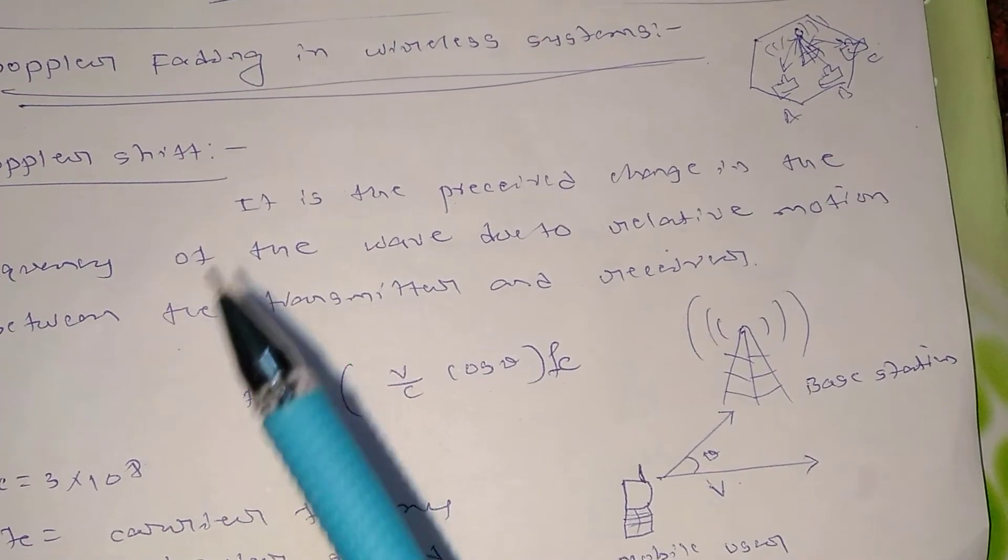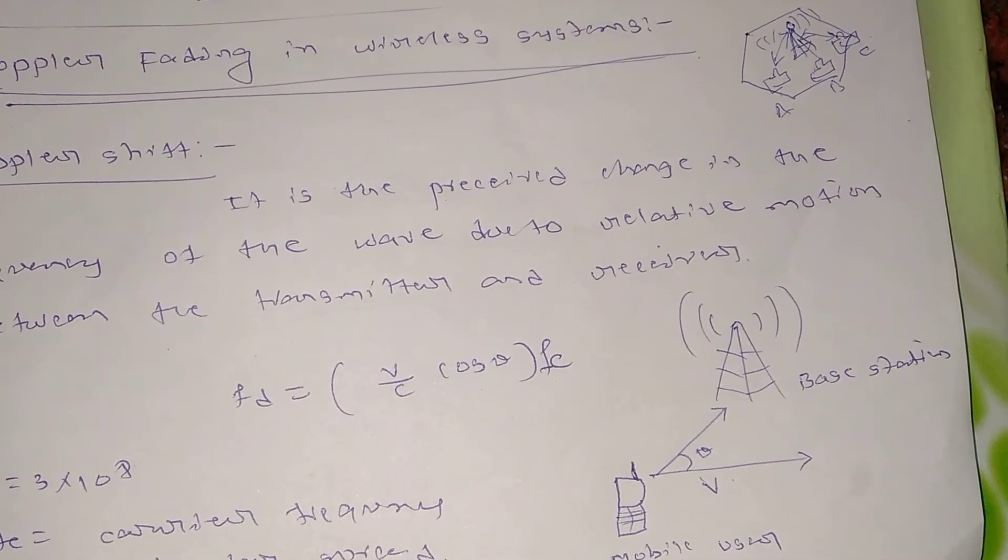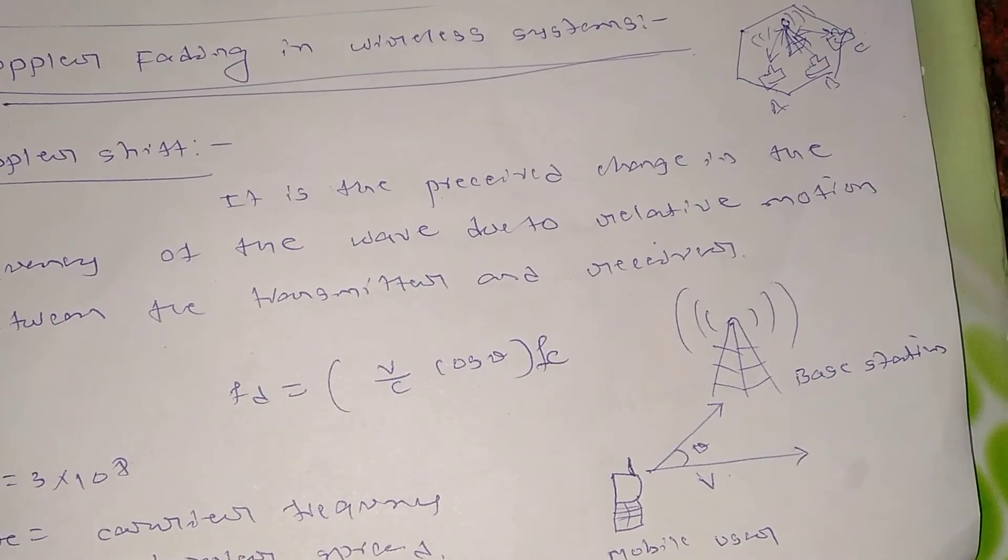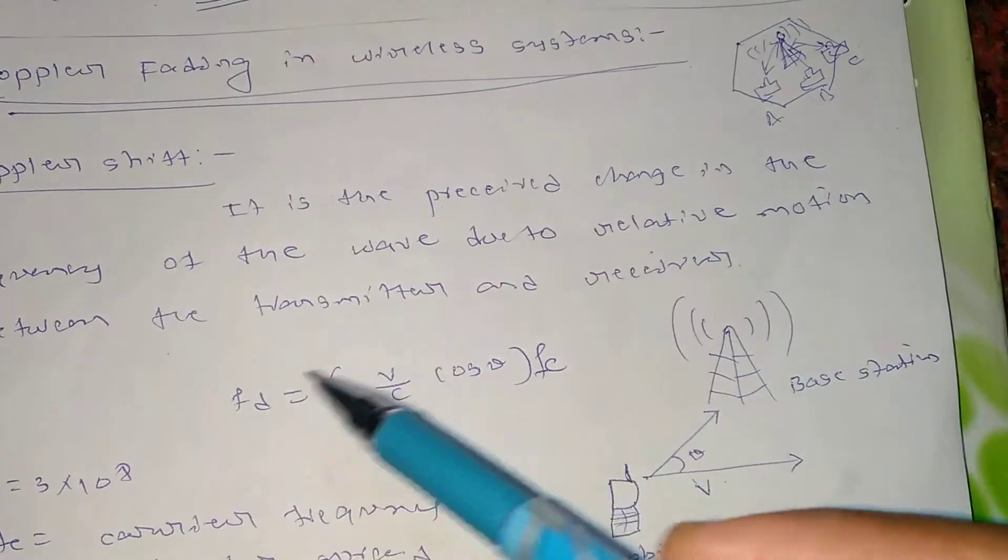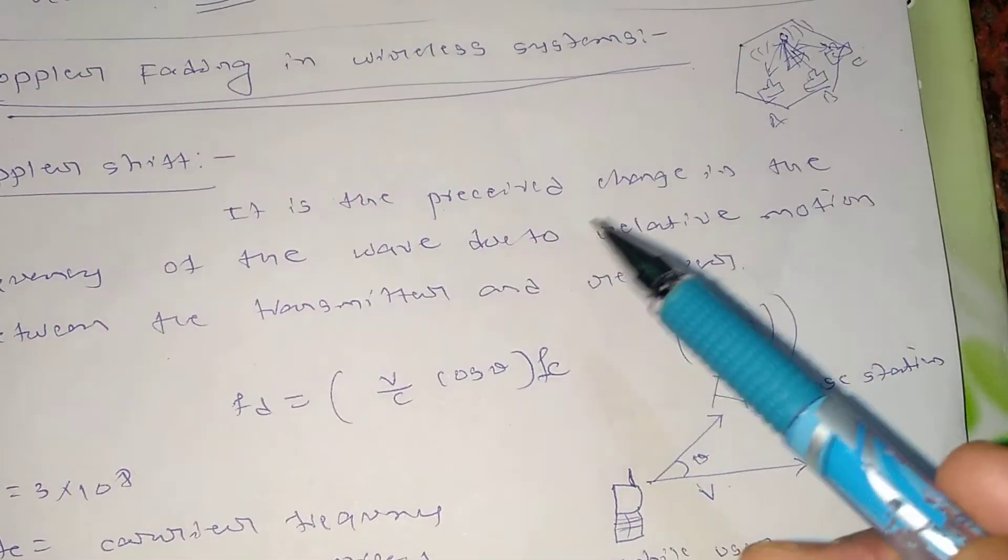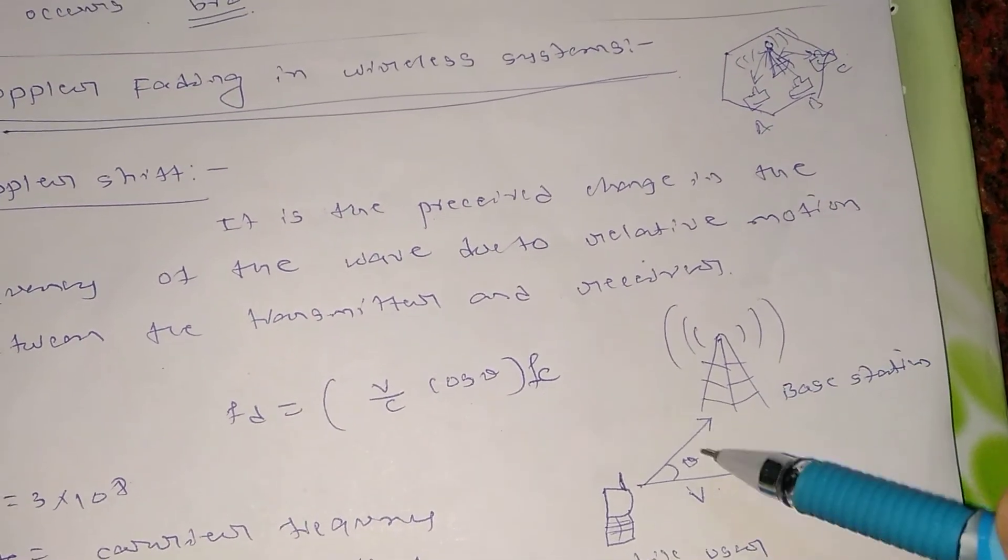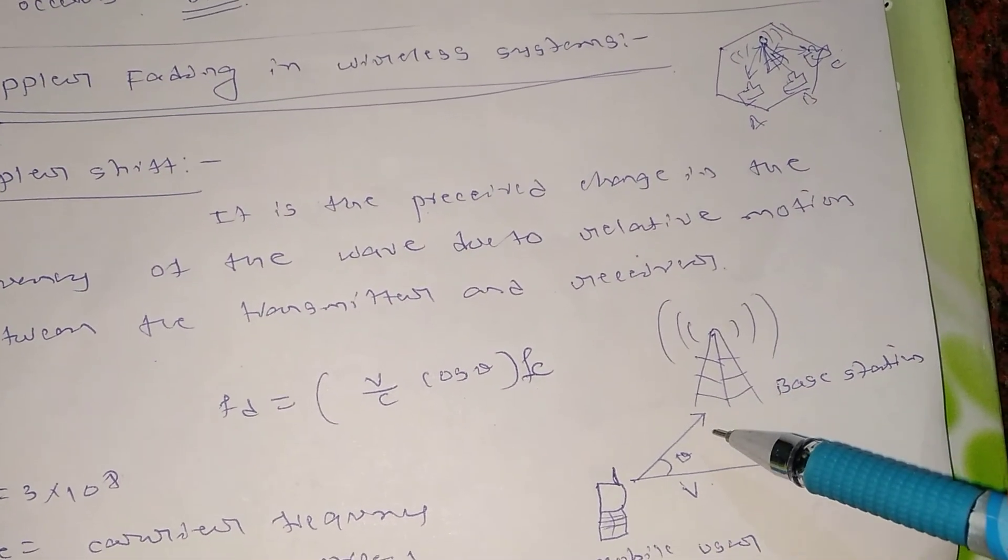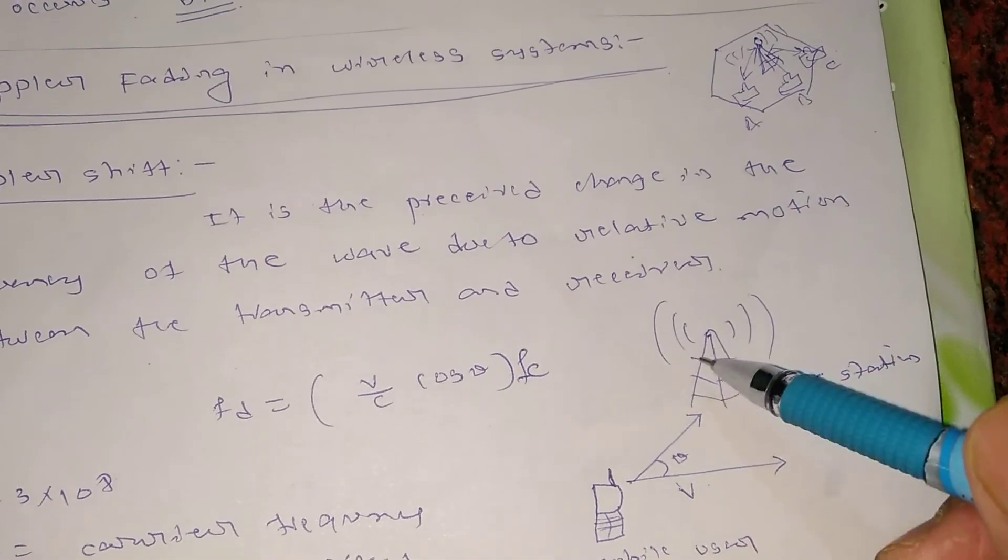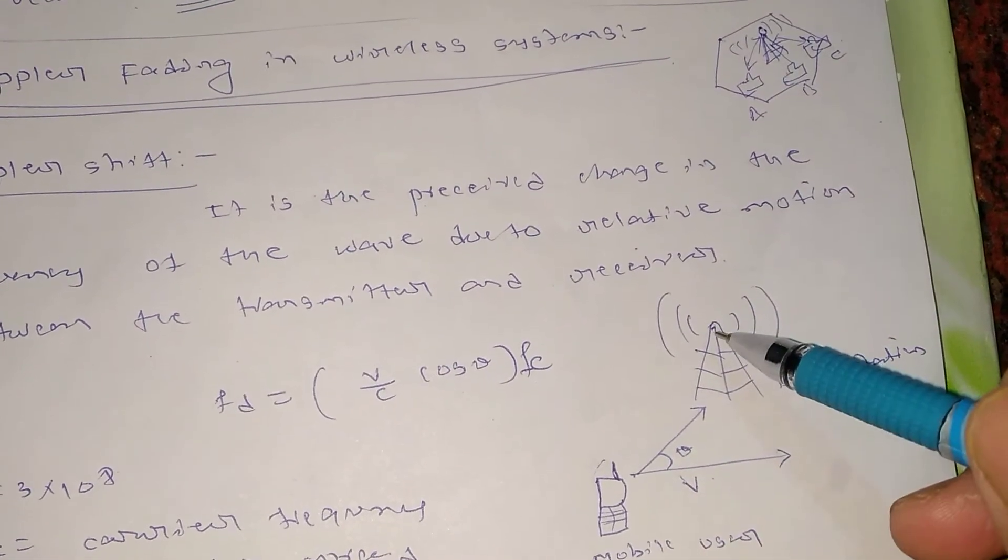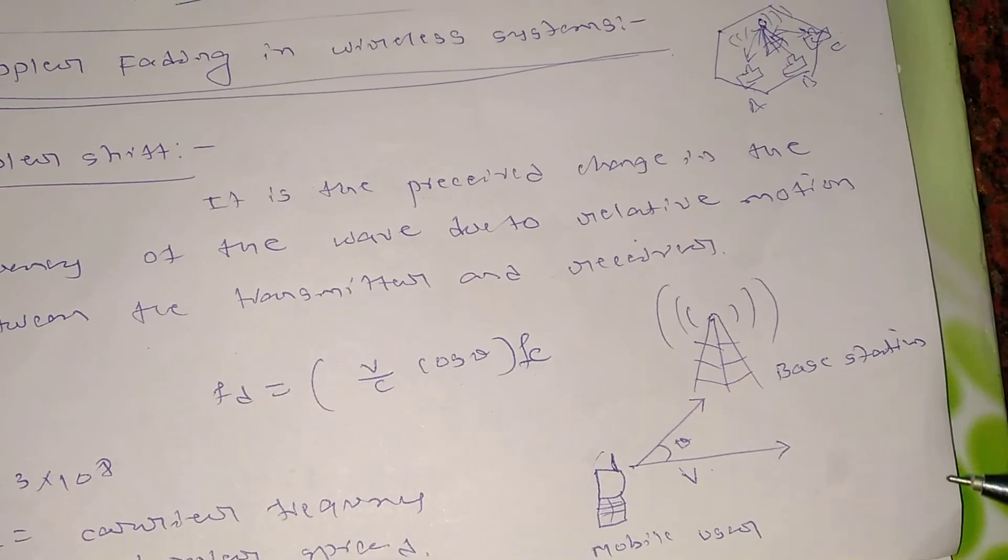What is meant by Doppler spread or Doppler shift? It is the perceived change in the frequency of the wave due to relative motion between the transmitter and receiver. It is a perceived change in the frequency of communication due to the relative motion between the mobile user and the base station. The frequency of communication changes and that is known as Doppler shift.